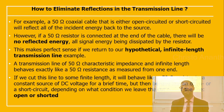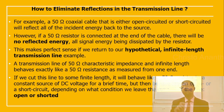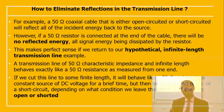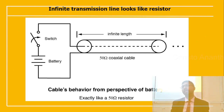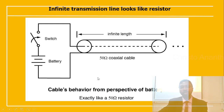A transmission line of 50-ohm characteristic impedance and infinite length behaves like a 50-ohm resistance. If you cut this line to a finite length, it will behave like a 50-ohm resistor to a constant DC voltage source for a brief time, then behave like an open circuit or short circuit depending on how the cut end of the line is terminated. The cable's behavior from the perspective of the battery is exactly similar to a 50-ohm resistor.